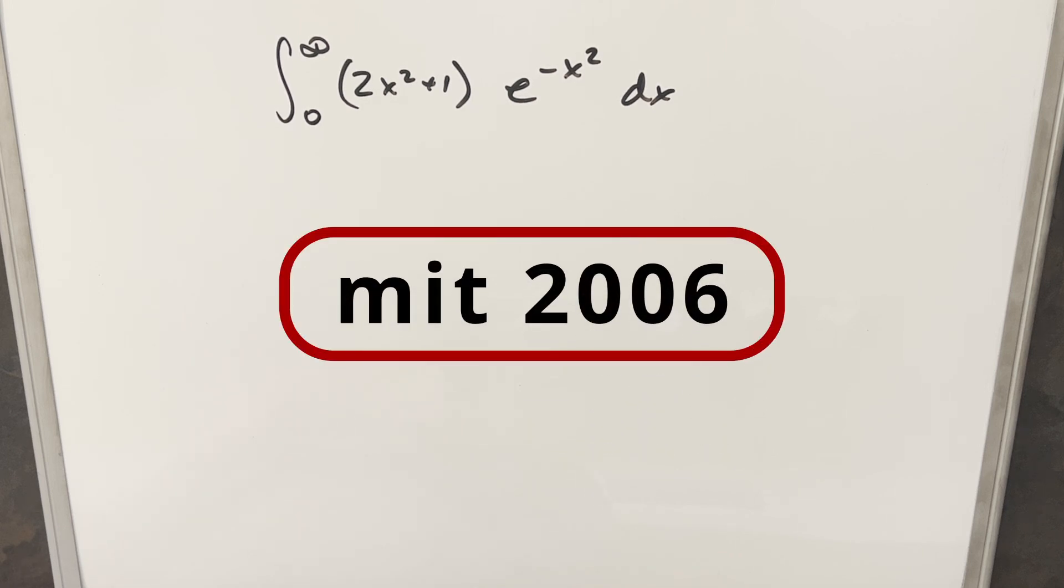Okay, we have here today a really interesting looking integral. This one was from MIT 2006. We have the integral from 0 to infinity, 2x squared plus 1, times e to the minus x squared dx.